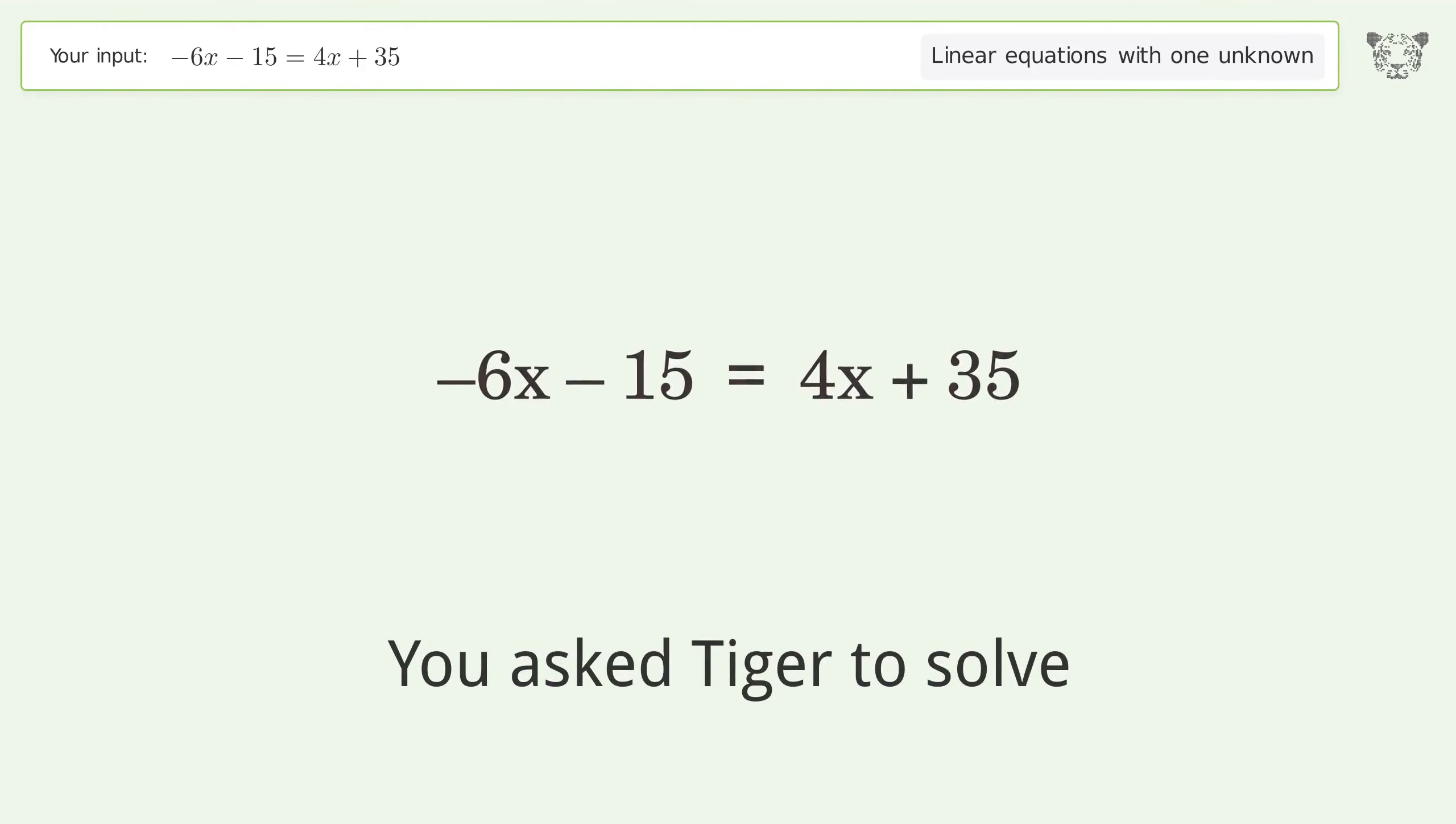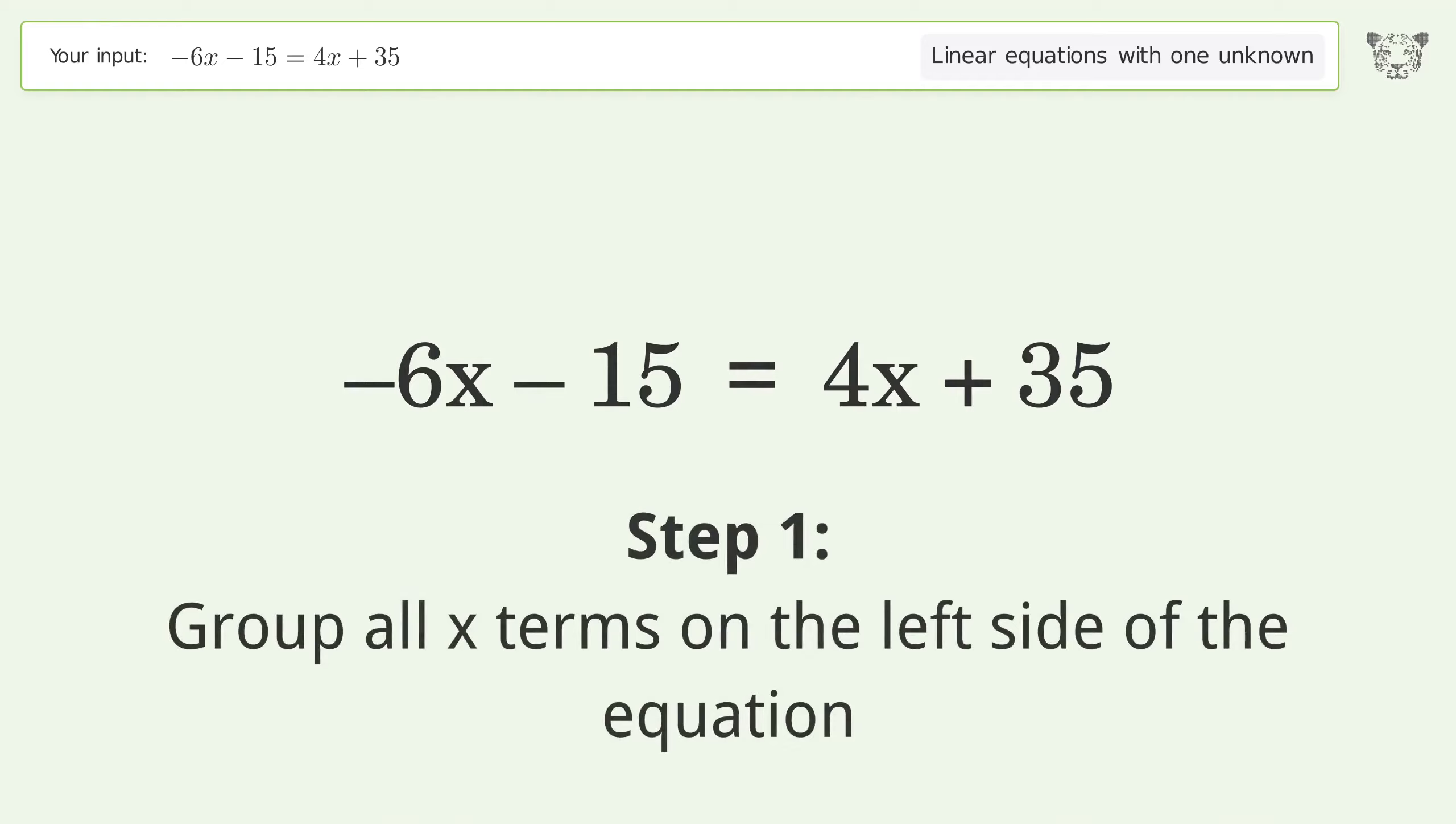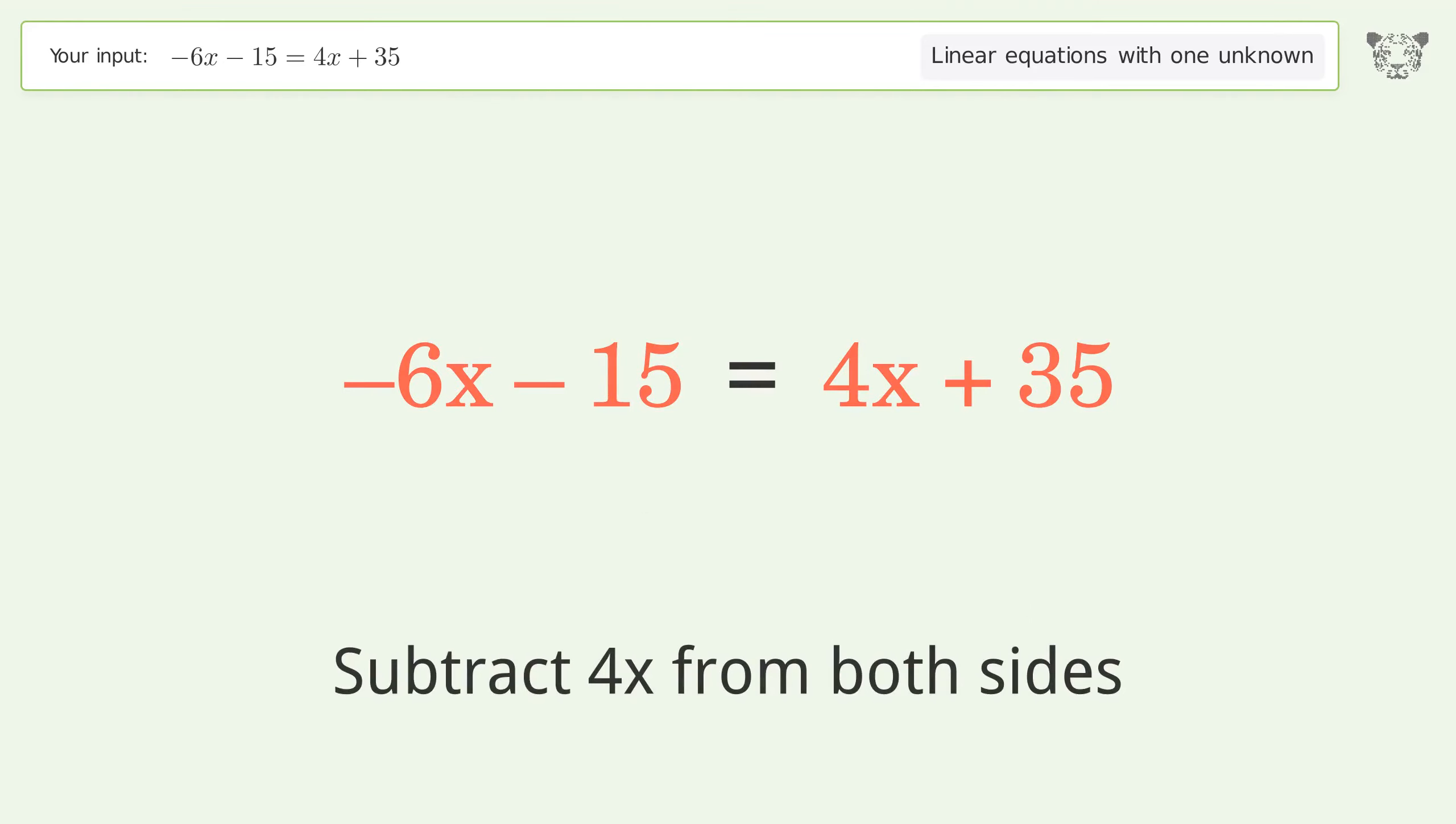You asked Tiger to solve this linear equation with one unknown. The final result is x equals negative 5. Let's solve it step by step. Group all x terms on the left side of the equation. Subtract 4x from both sides.